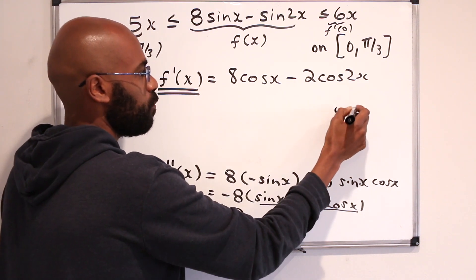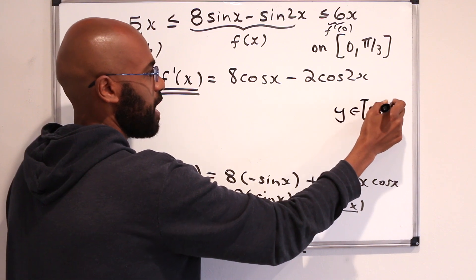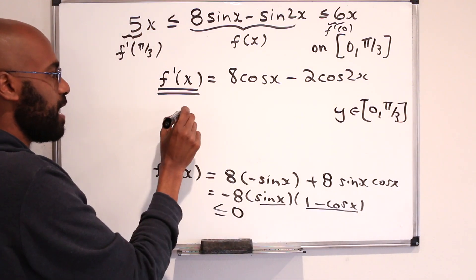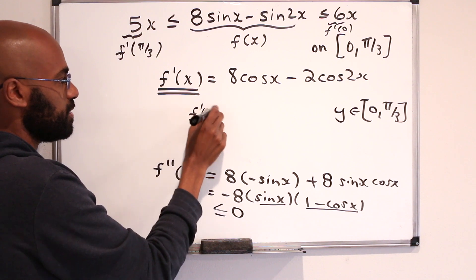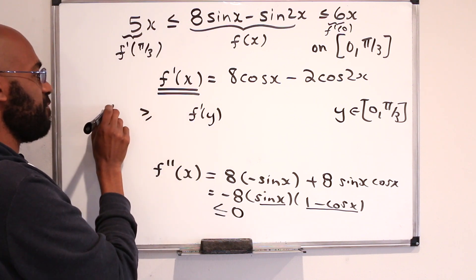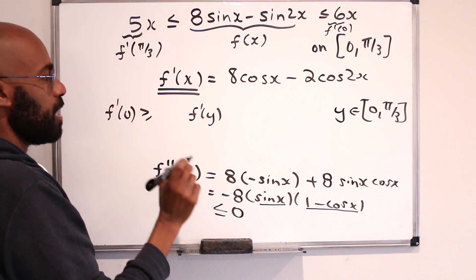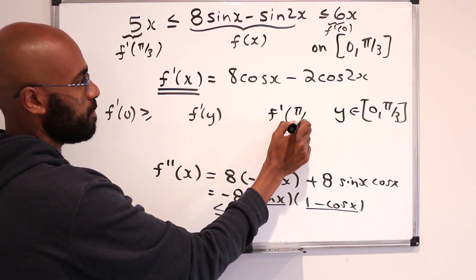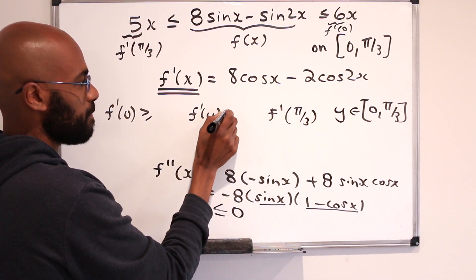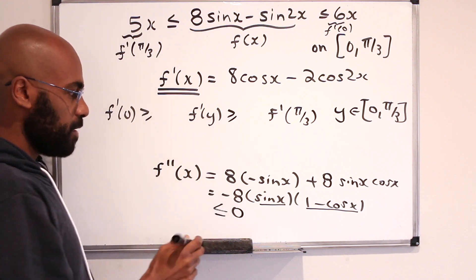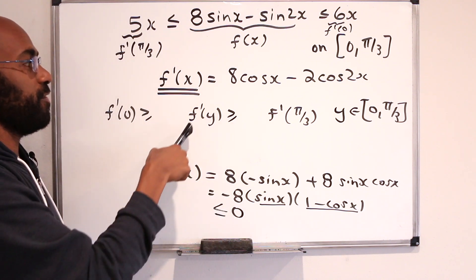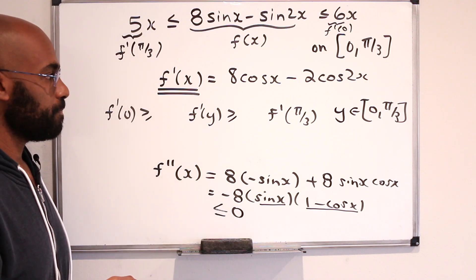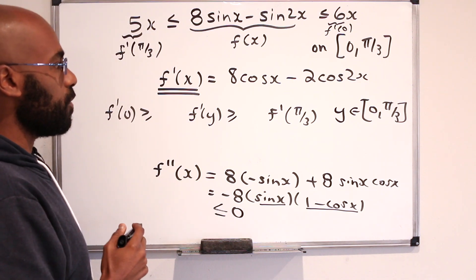So what this means is: if you pick any y in the interval [0, π/3], then f'(y) is sandwiched between f'(0) and f'(π/3), because the derivative of f' — the second derivative — is a non-positive number.